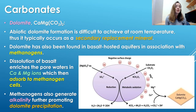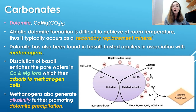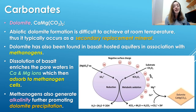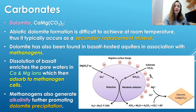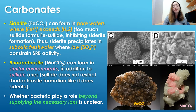SRB also provide EPS — extracellular polymeric substances — that act as adsorption sites for anions due to their cation-rich nature. But SRB aren't the only ones thought to contribute to primary dolomite formation. Dolomite has also been found in basalt-hosted aquifers in association with methanogens. Methanogens produce methane, and their role in dolomite formation is thought to be the increase in alkalinity from their metabolism. In this basalt-rich environment, dissolution of basalt enriches the methanogen-containing pore waters in calcium and magnesium ions, which adsorb to methanogen cells due to their negative surface charge, further promoting dolomite formation.